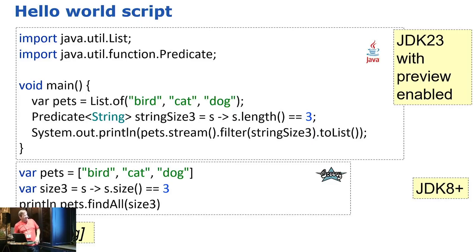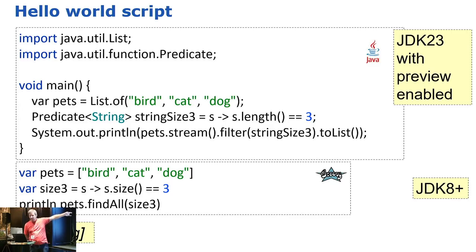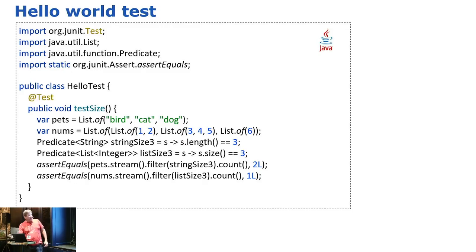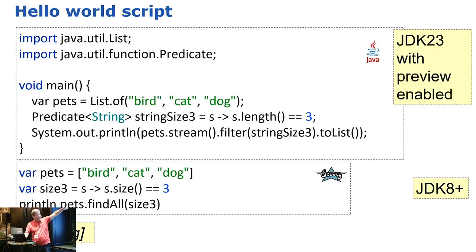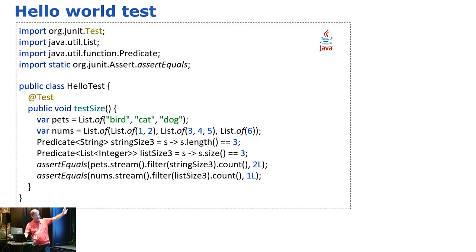Here's a really trivial example. If you go and grab the latest JDK 23 early access versions coming later this year and switch on all the preview modes, you can have fairly small scripts like this — but you could go back to JDK 1.5 and have really small scripts as well. Here we've got a list of three things and we're going to pick out all the ones where the strings are of size three. We're going to write some tests: we've got a list of strings and a list of lists, and we're going to count the things of size three.